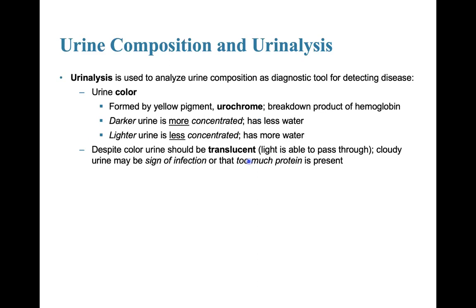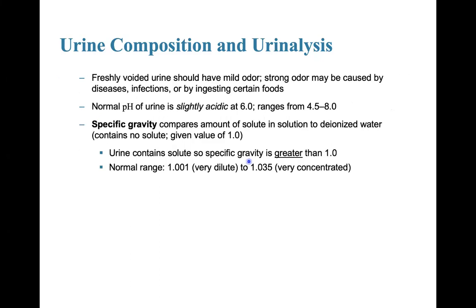Urinalysis is used to analyze urine composition as a diagnostic tool for detecting disease. Urine color is formed by a yellow pigment called urochrome, a breakdown product of hemoglobin. Darker urine is more concentrated with less water; lighter urine is less concentrated with more water. Despite color, urine should always be translucent — cloudy urine can be a sign of a urinary tract infection or excessive protein.